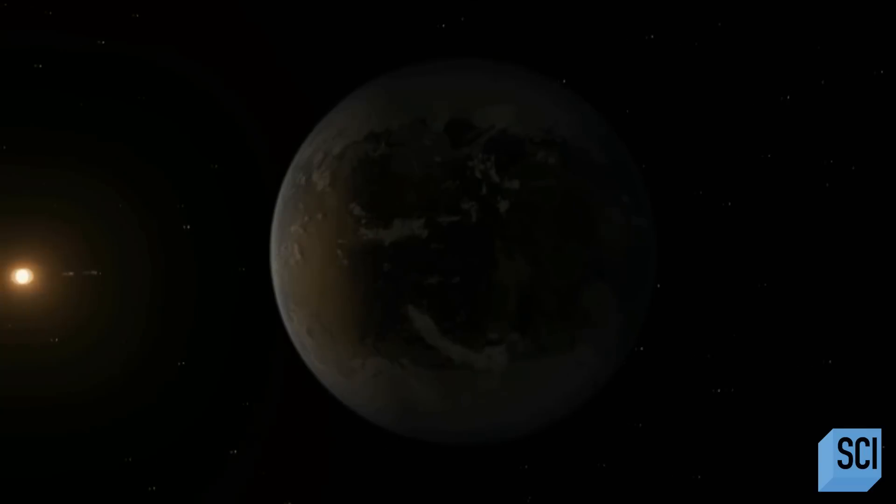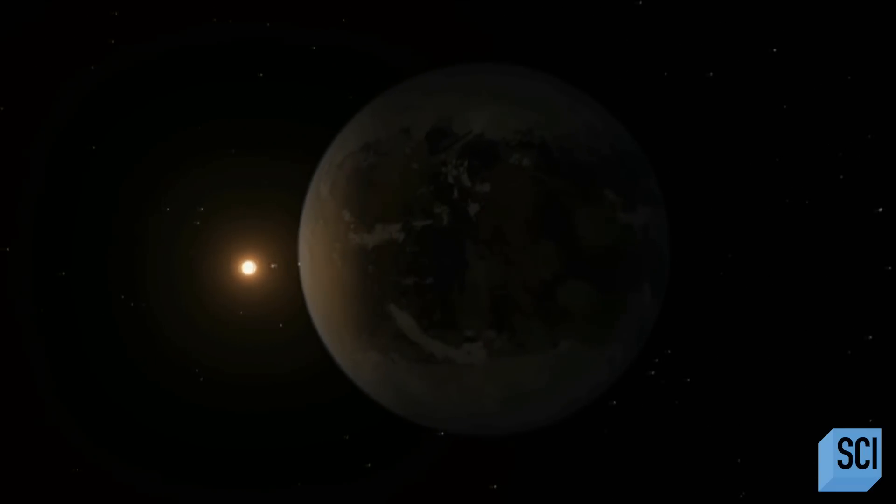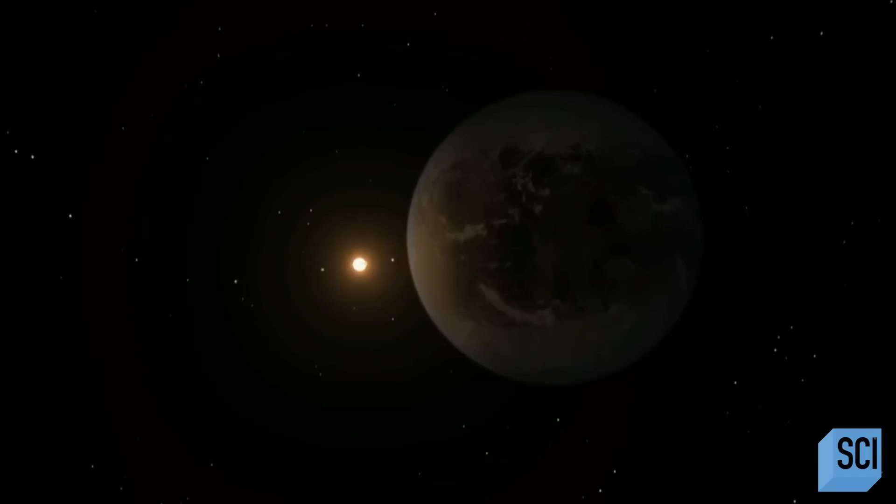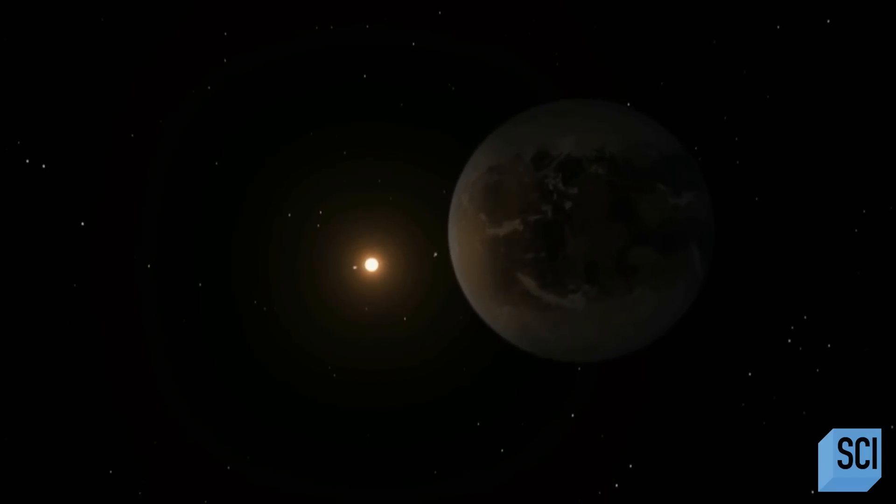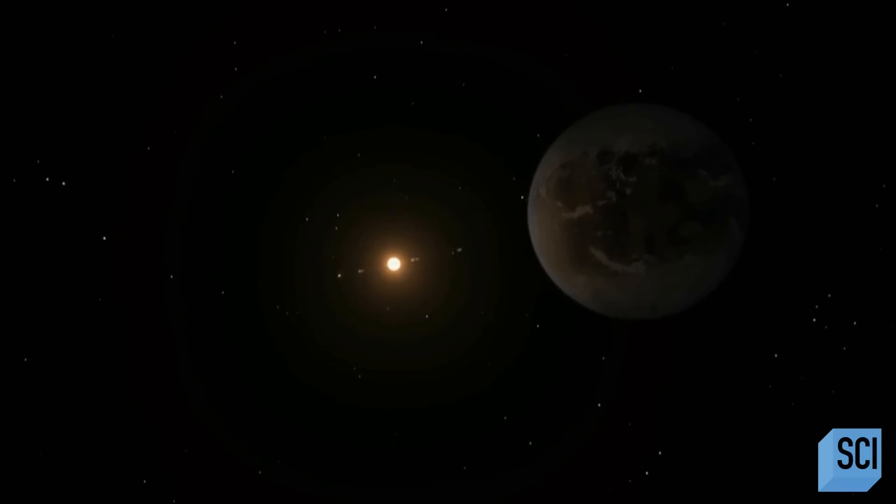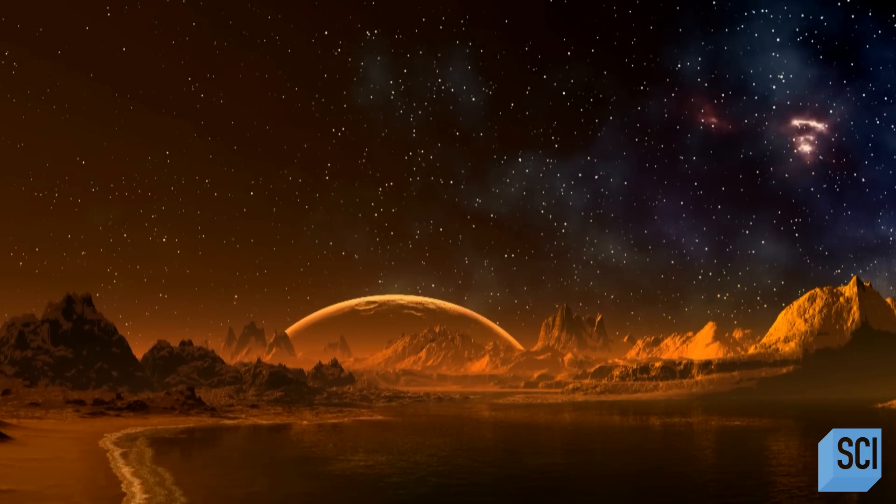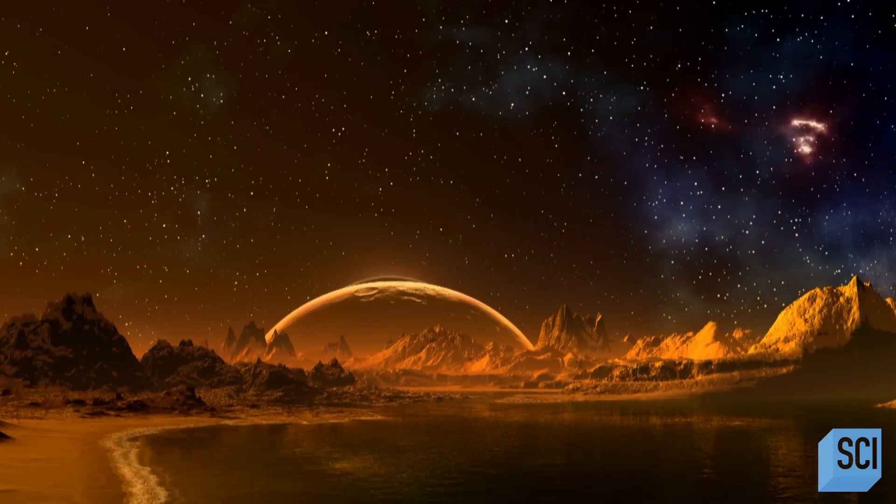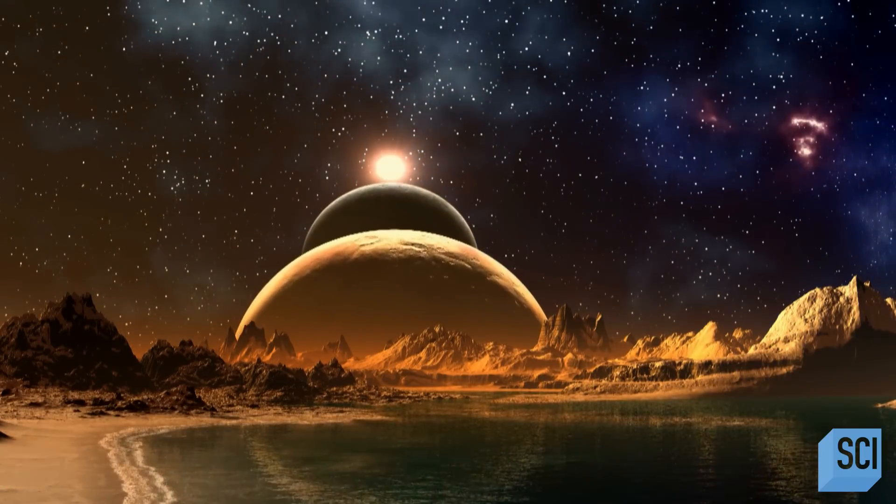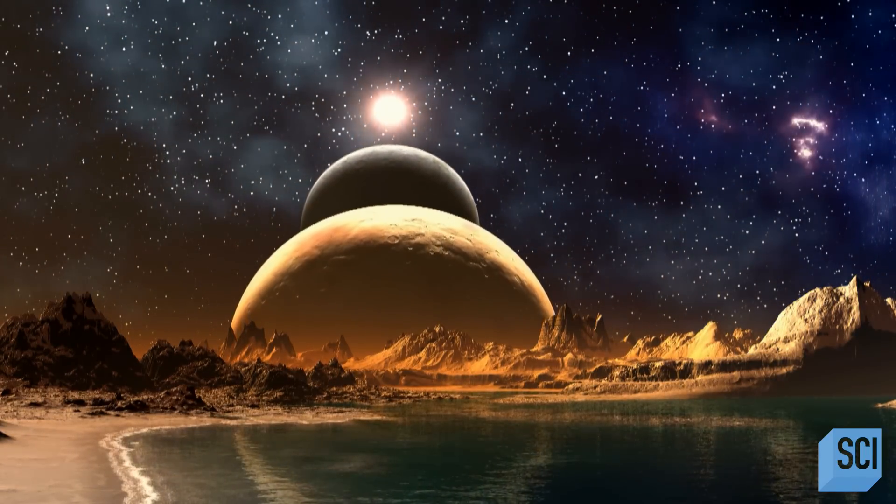Kepler 186f orbits its star once every 130 days and receives one-third the energy that Earth does from the Sun, placing it near the outer edge of the habitable zone. If you could stand on the surface of Kepler 186f, the brightness of its star at high noon would appear as bright as our Sun is about an hour before sunset on Earth.